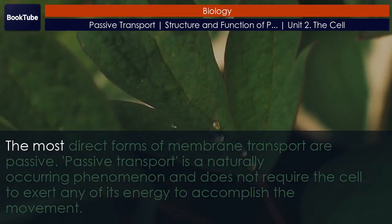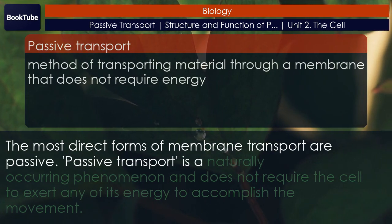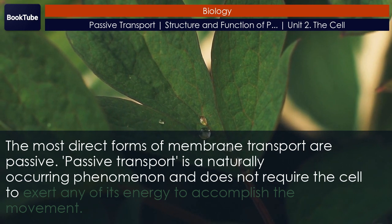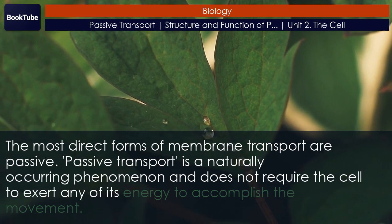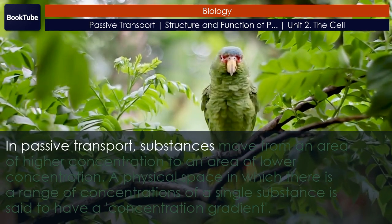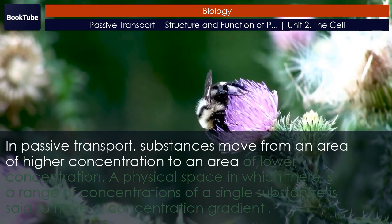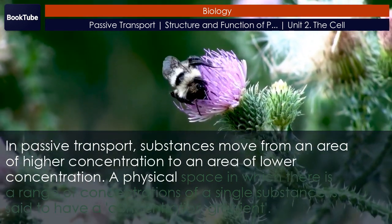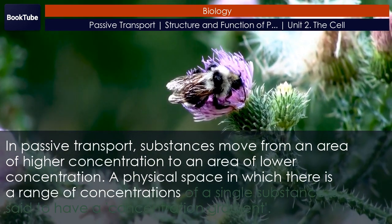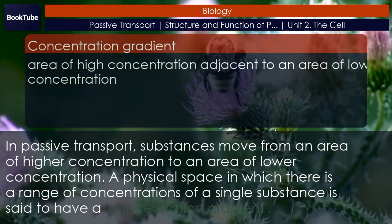The most direct forms of membrane transport are passive. Passive transport is a naturally occurring phenomenon and does not require the cell to exert any of its energy to accomplish the movement. In passive transport, substances move from an area of higher concentration to an area of lower concentration. A physical space in which there is a range of concentrations of a single substance is said to have a concentration gradient.